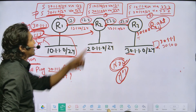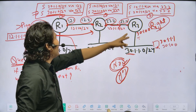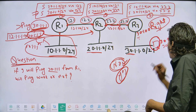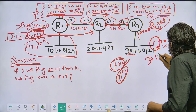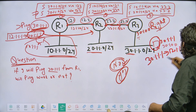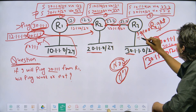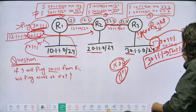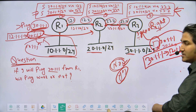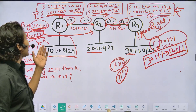Router 1 forwards the packet to Router 2, which matches destination 30.1.1.1 and forwards it to Router 3. Router 3 delivers it to the user at 30.1.1.1. That user generates a reply with source IP 30.1.1.1 and destination IP 12.1.1.1. The PC forwards the reply to Router 3, but there is no route for 12.1.1.1 in Router 3's routing table — so the ping fails.